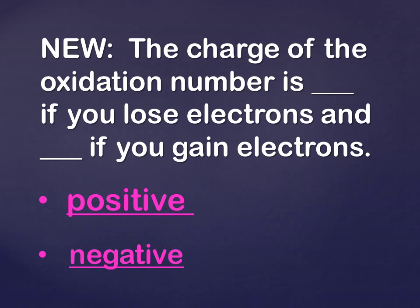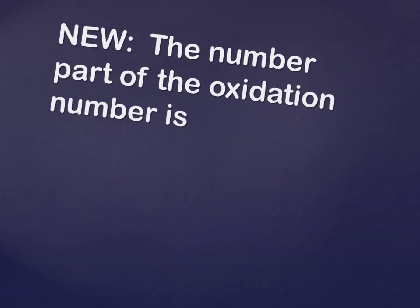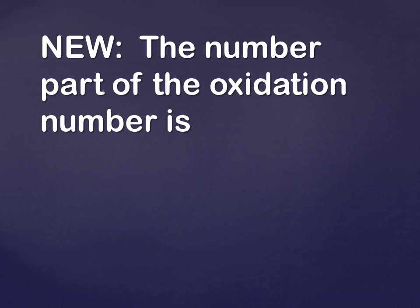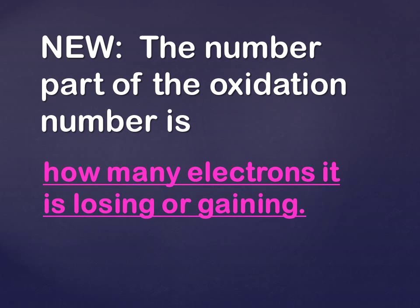Some people like to think of this as losing weight. A lot of society thinks that losing weight is a good, positive experience. So it's a positive experience. The number part of the oxidation number — how do we figure that out? That number is going to be equal to how many electrons you're losing or gaining, because that is how much charge you have.